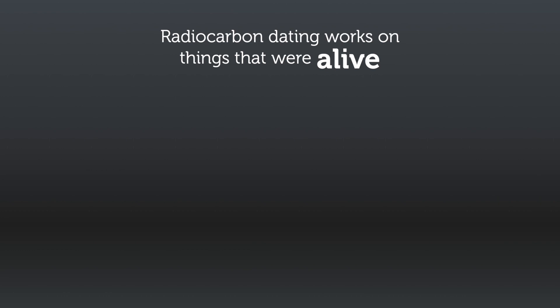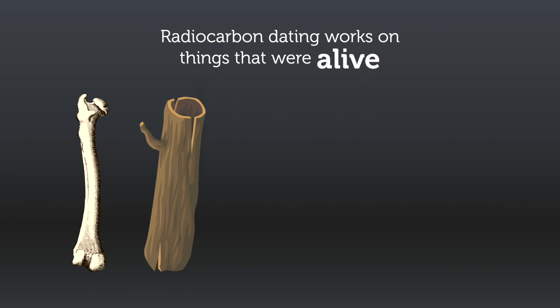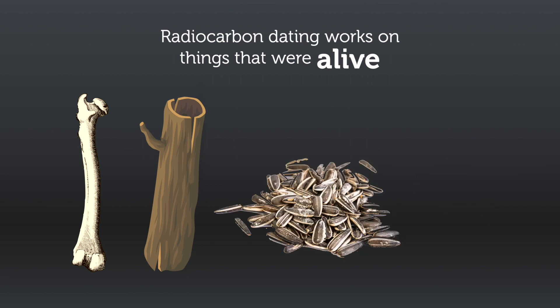We can radiocarbon date anything that was once alive. Therefore we date human and animal bones, preserved wood and charcoal, as well as other parts of plants such as seeds, or even insects. Objects made from these products can also be dated — for example, clothing. Radiocarbon dating is destructive: the sample is completely destroyed when it is dated, so we need to be very selective about what we date, and we often use drills to take a smaller sub-sample.